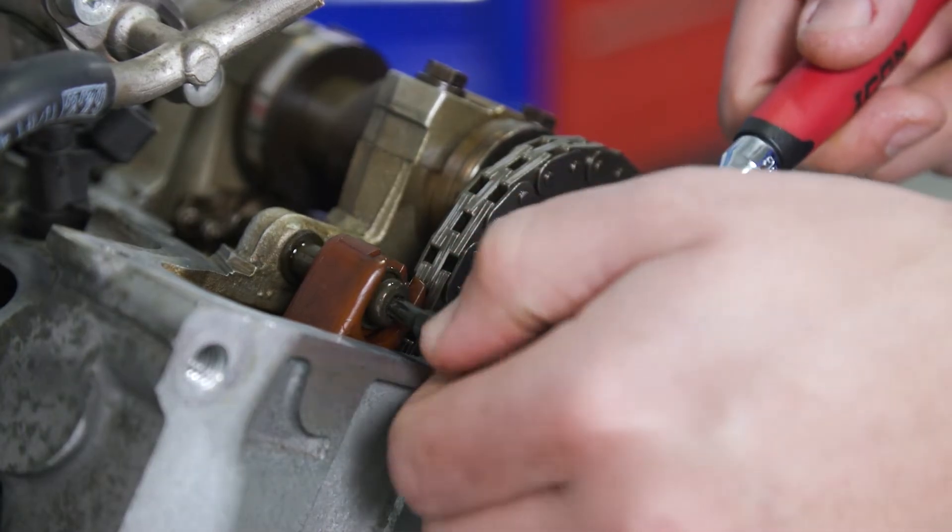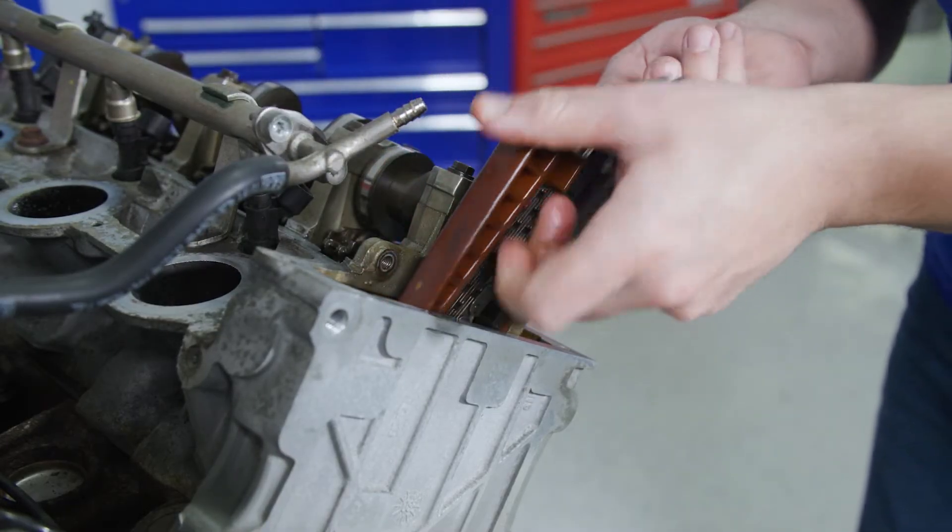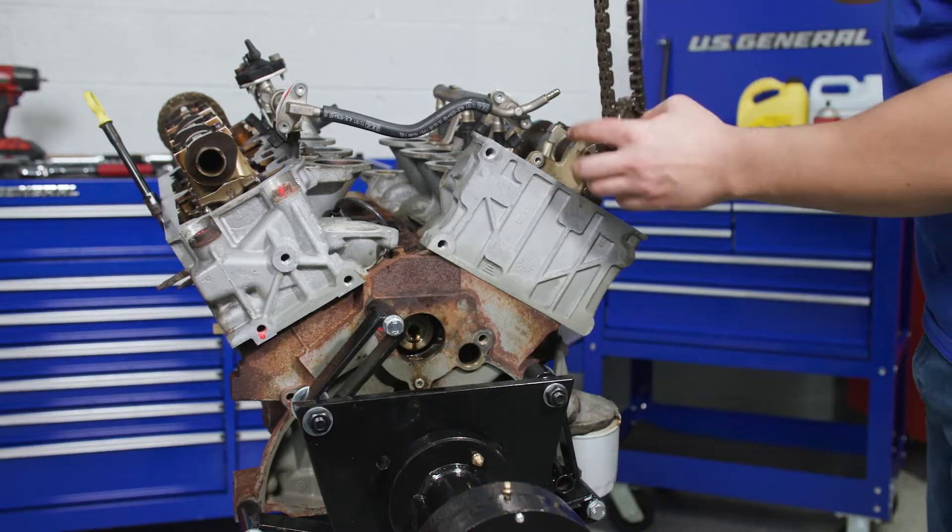After that, take off the upper chain guide bolt. Wiggle the chain and guides and remove them from the engine. Then wiggle the cassette assembly out.